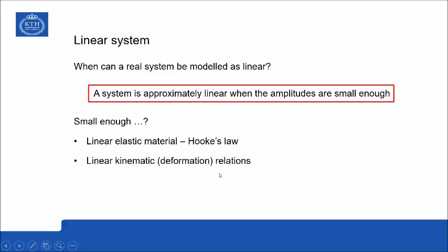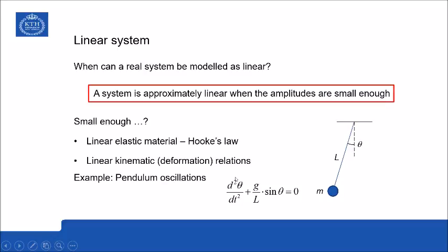And as an example of what we mean here is, for instance, this pendulum. Now the pendulum equation, where the angle theta is the variable, reads like this, and as you can see it contains a sine theta term. Now this is a nonlinear term in theta. But if theta is small, then we can use the Maclaurin expansion of theta and use only the first term, which is theta itself. And in this case, with small theta amplitudes, the governing equation will become a linear differential equation.